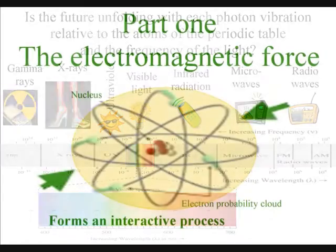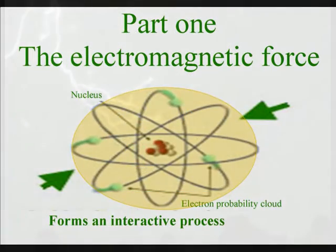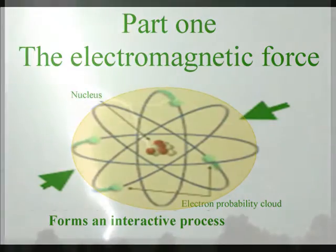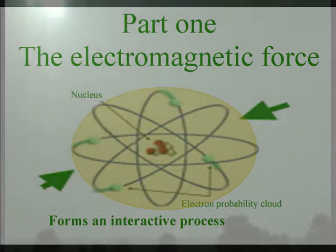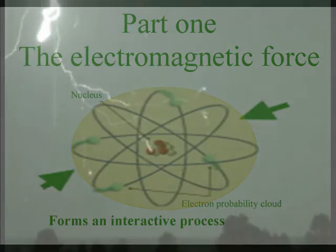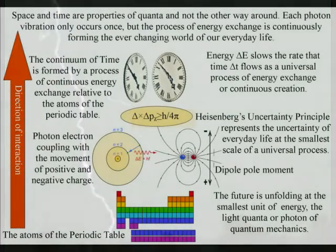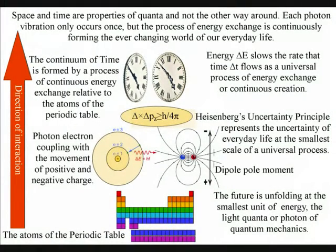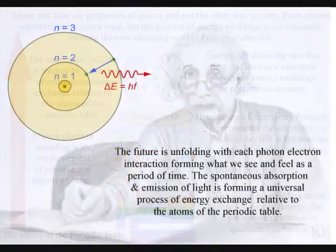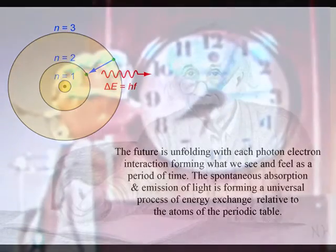If we start with the electromagnetic force that is carried by the photon forming the movement of charge, creating the flow of electric and magnetic fields, in this theory it is this interaction between the photons and the electron probability cloud of the atoms that form the ever-changing world of our everyday life that we see and feel as the passage or continuum of time.